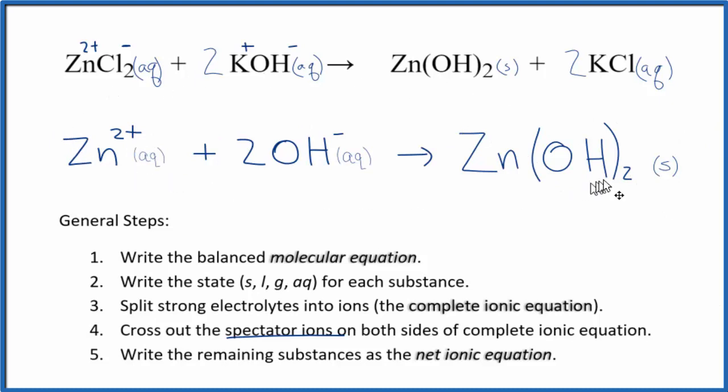And this is the net ionic equation for ZnCl2 plus KOH. You can see that the charge is conserved. We have 2 plus here, and then 2 times the 1 minus, 2 minus. So those cancel out. We have a neutral compound. And we have the same number of atoms on each side of the equation. 1 zinc, we have 2 oxygens here, 2 oxygens here, 2 hydrogens, and 2 hydrogens here.